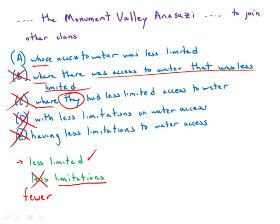That leaves answer choice A: whose access to water was less limited. Answer choice A is free of grammatical error, it is free of ambiguity, and it is by far the best answer choice here.